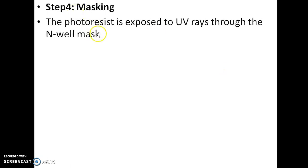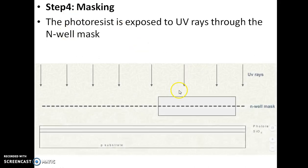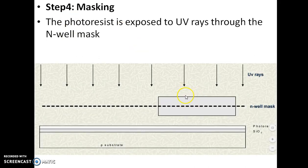The next step is masking. The photoresist is exposed to ultraviolet rays through the N-well mask. Using the N-well mask, we expose the photoresist material — this is the photoresist material, this is the SiO2 layer, this is the N-well mask, and this is the ultraviolet light.